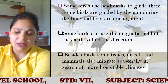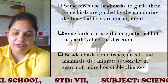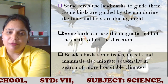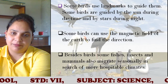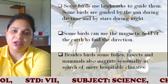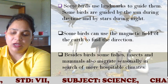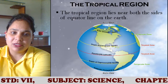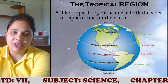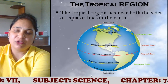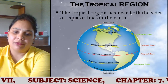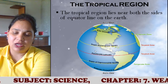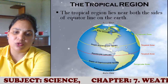We have just seen how the migration of birds takes place. That was all about the polar region and extreme cold climate. Now we are going to look at the next part — the tropical region of the earth. The earth is divided into many regions, and one of those regions is the tropical region.